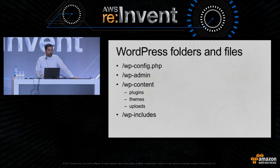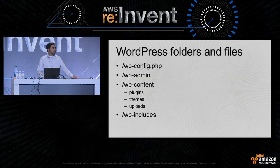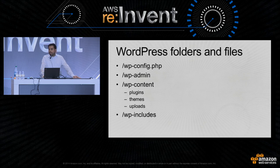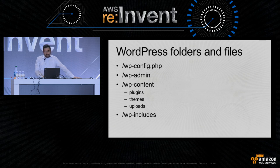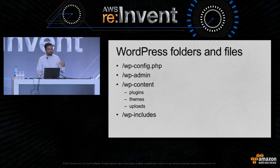Let's start with the wp-config file. This is where WordPress stores all the basic configuration, things like the database endpoint and the credentials. Then the admin folder holds the application code for the administrative portion of the website — this is what allows your editors to add new content. Then we have the wp-content folder. This is for everything that is not part of the WordPress distribution, but is user-defined.